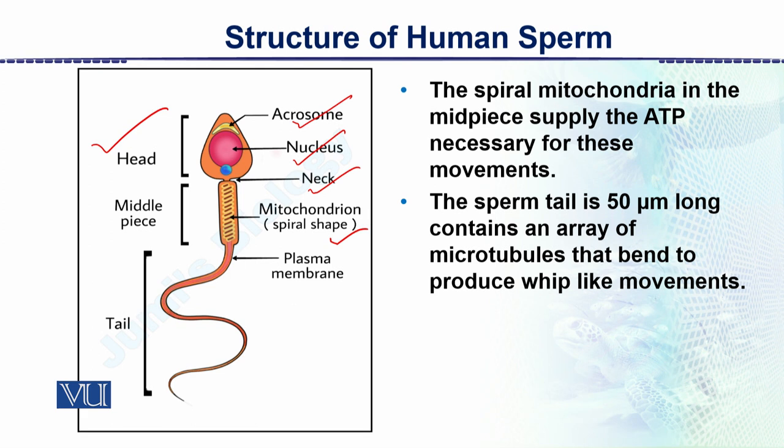So this is the complete structure of the sperm — we have seen the head, the middle piece, and ultimately the long tail. Further detail can be studied under the electron microscope, which reveals the microtubules within the middle piece and tail.